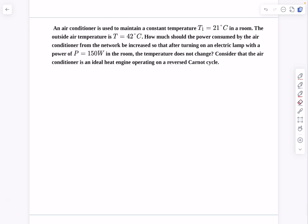How much should the power consumed by the air conditioner be increased so that after turning on an electric lamp with a power of 150 watts in the room, the temperature does not change. We have to consider that the air conditioner is an ideal heat engine operating on a reversed Carnot cycle. Let's begin.